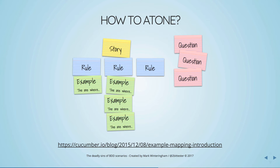How do we atone for this? I've adopted the Example Mapping approach that Matt Wynne came up with at the end of 2015. Example Mapping adds a bit of structure to your collaborative sessions without stifling conversation. We start with our story — as a user I want something to happen so that I have value — then we set out our rules on Post-it notes. Each rule is an acceptance criterion: there must be a link to click, a text box and submit field, or perhaps it has to be under 140 characters.